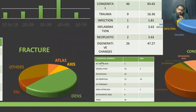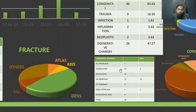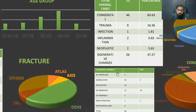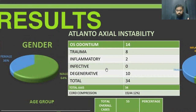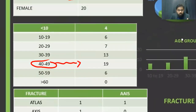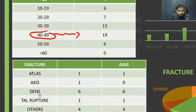Congenital abnormalities were predominant in our study. Among congenital abnormalities, os odontoideum was the most common, followed by atlanto-occipital assimilation, and rachischisis cases were also predominantly affected. Coming to atlanto-axial instability, which is one of the most dreaded complications affecting the CVJ, os odontoideum was responsible for the majority of patients who had atlanto-axial instability, followed by trauma cases. A significant number of patients affected by degenerative changes also had atlanto-axial instability. In trauma patients specifically, the most commonly involved bone was the dens.